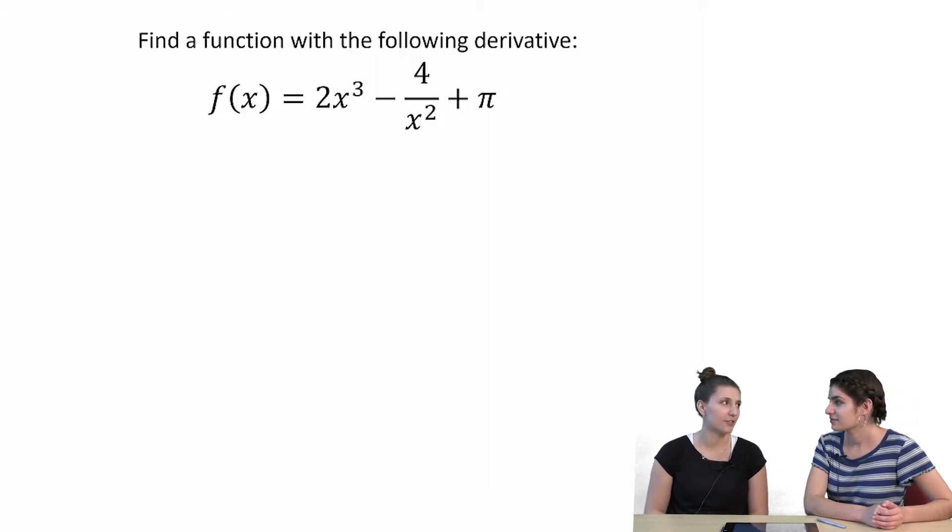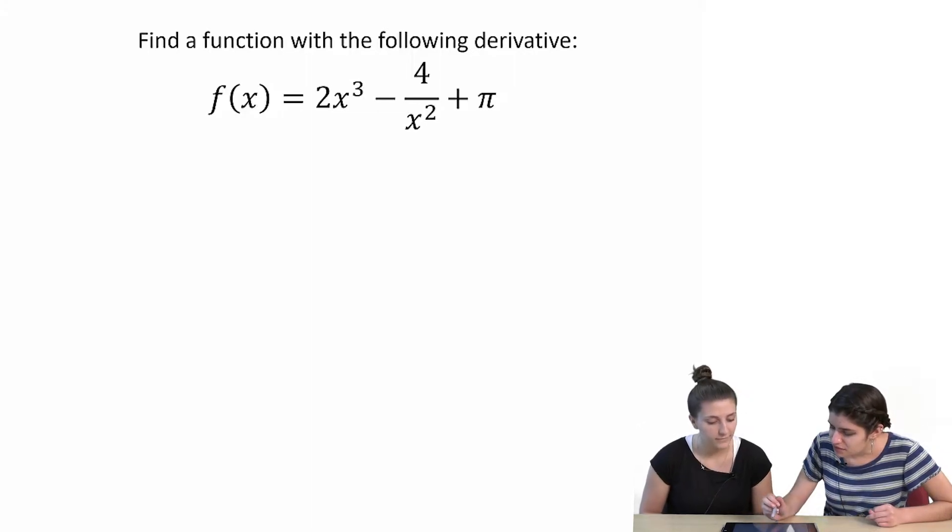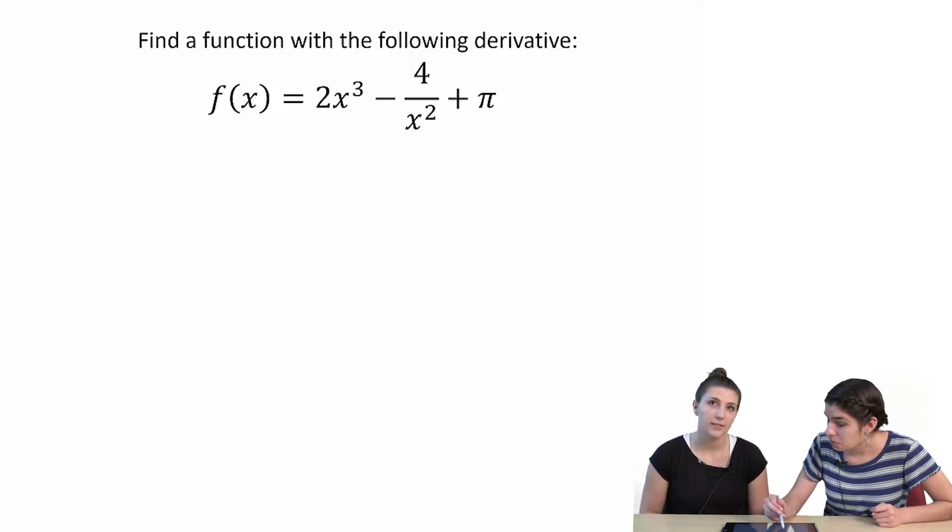Okay, so I think we just first take the derivative. Sounds good. Okay. So we have 2x to the third, so that becomes 6x squared.